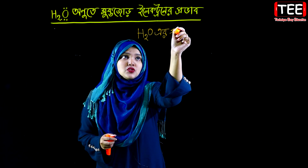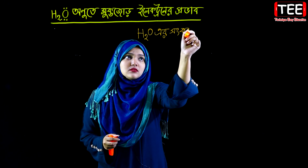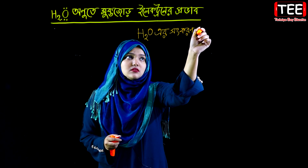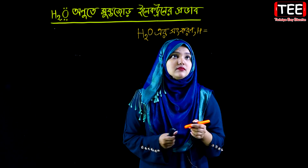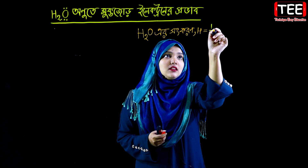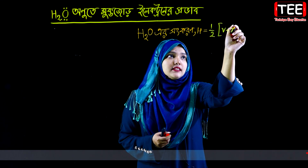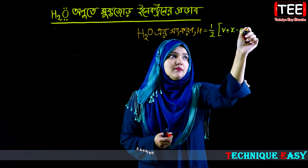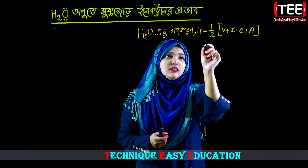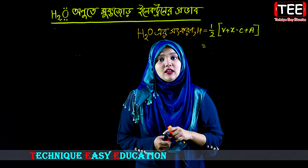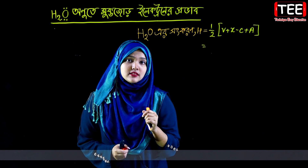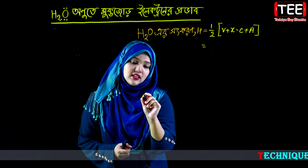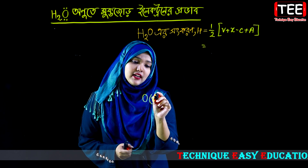We will now look at H₂O. For this atom, using the formula: N minus SHU, take half into V plus X minus C plus A, to find the final valence. The central atom is oxygen, and we consider the electrons of oxygen connected to it.